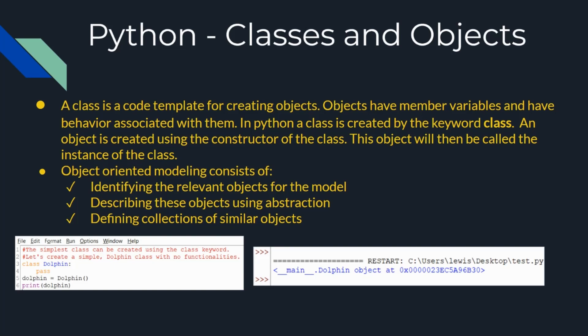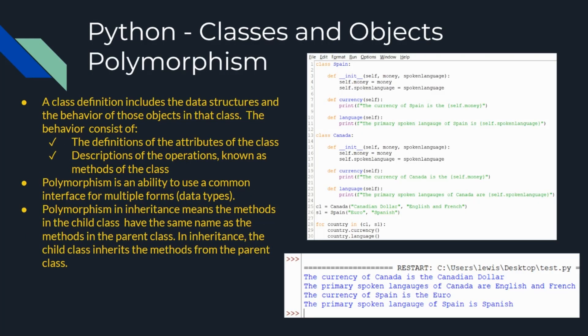System designs emphasize modular structuring. A problem is often partitioned into subproblems and a solution is designed for each subproblem. In Python, many modules contain one or more definitions. Object-oriented modeling consists of identifying the relevant objects for the model, describing these objects using abstraction, and defining collections of similar objects. A class definition is implemented with a class header and additional statements, including the name of the class and other related information. In a class definition, two categories of variables can be defined: class variables and instance variables. Class variables are defined usually at the top and their values are shared by all objects or instances of the class.